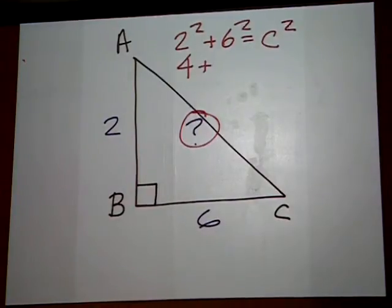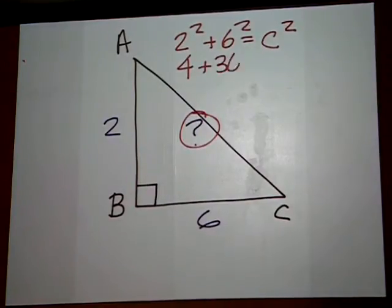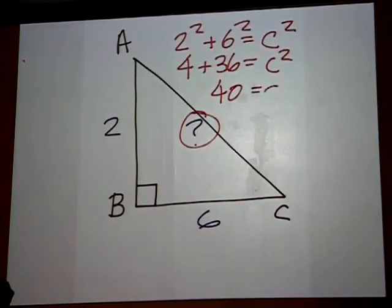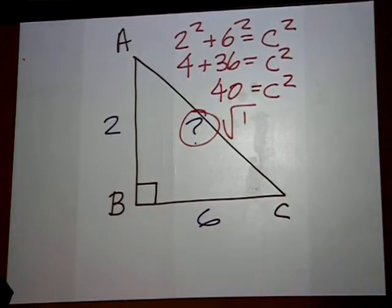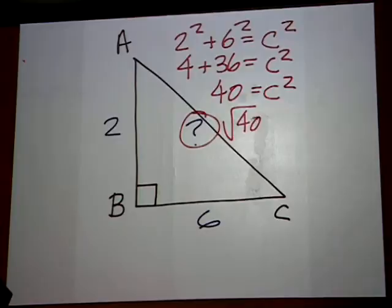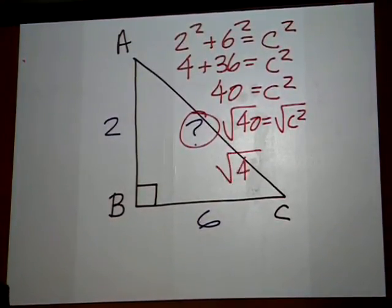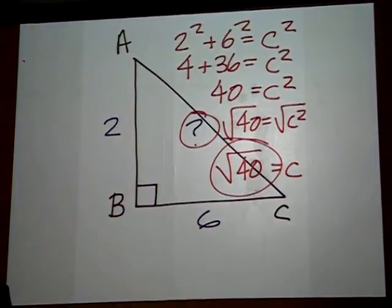That is 4 plus 36 equals c squared. 40 equals c squared, and we must find the square root of both sides to get c by itself, which leaves us with the square root of 40 for an answer.